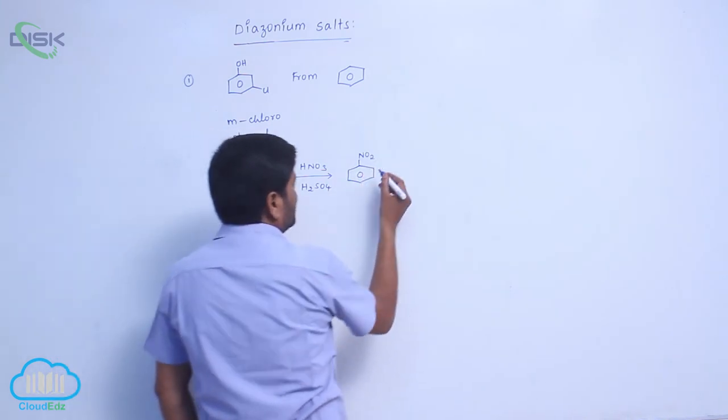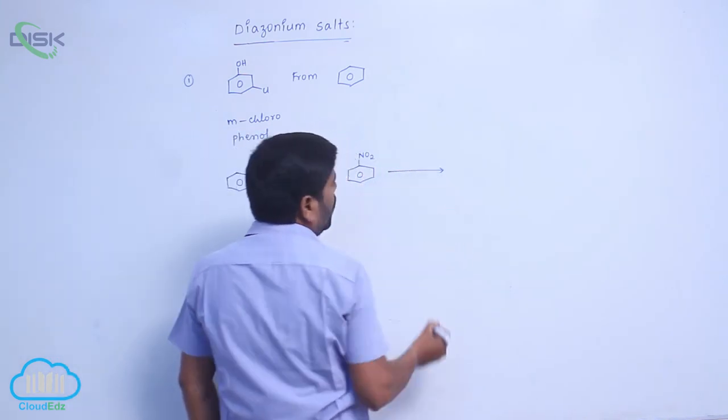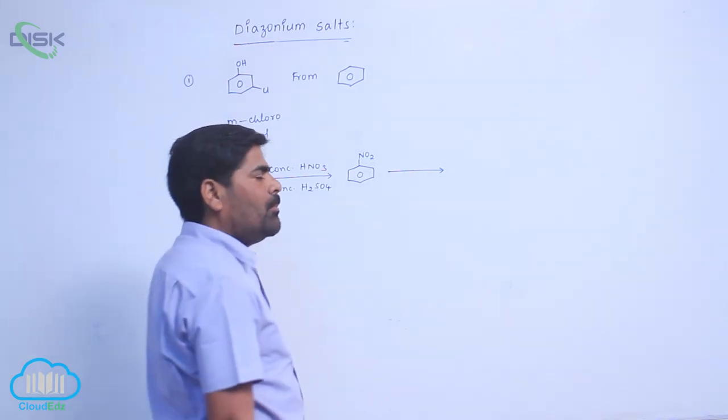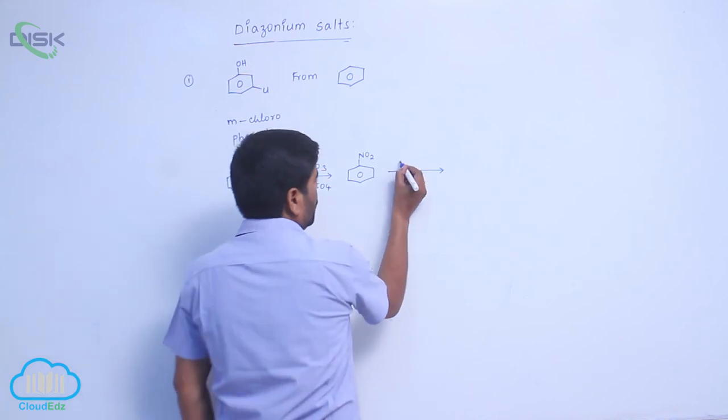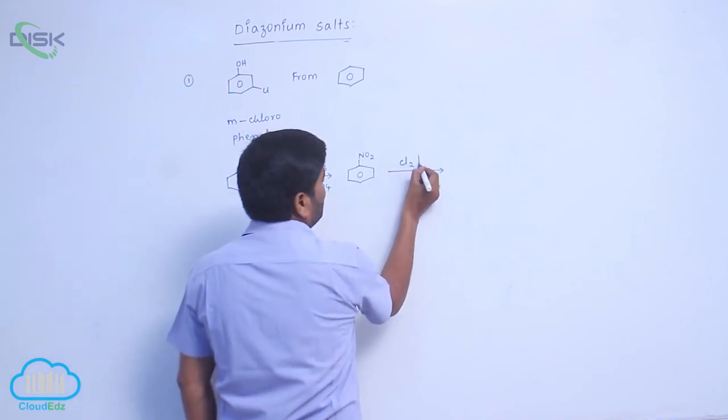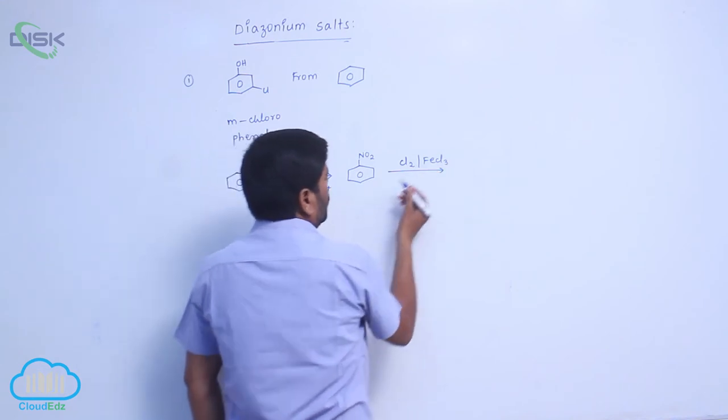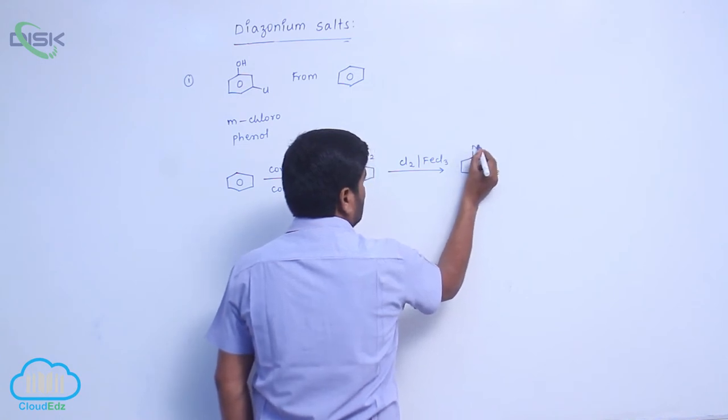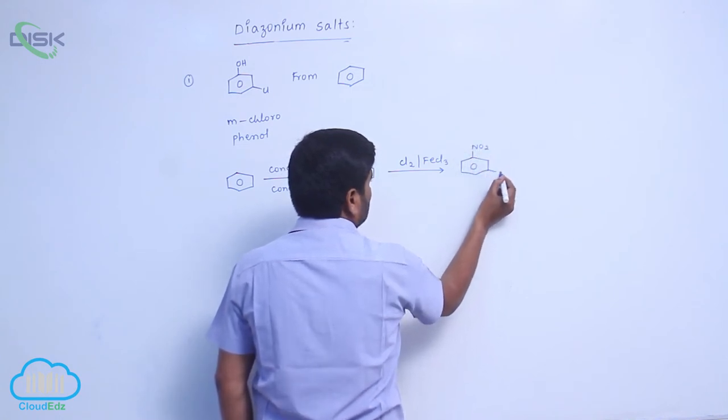Generally, on the benzene ring, the nitro group can act as a ring deactivating group. Therefore, it is a meta-directing group. So when chlorine in presence of FeCl3 is added, it forms metachloronitrobenzene. This is the nitro group, then chlorine.